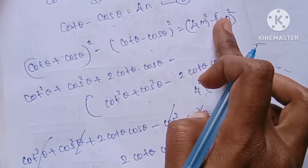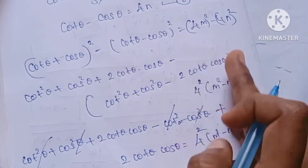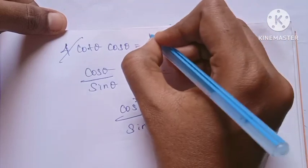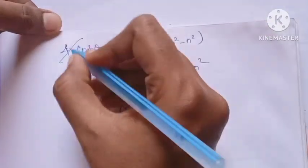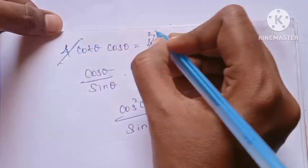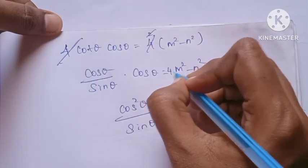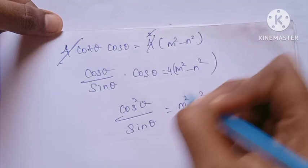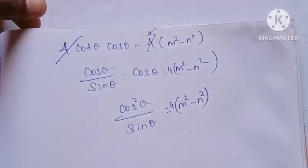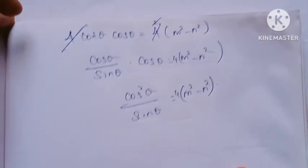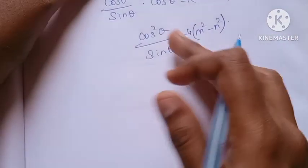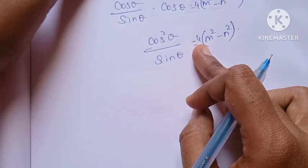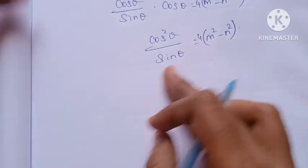So 4m whole squared gives 4 squared as a common factor, and 4n whole squared also gives 4 squared as common. Since 4 squared appears on both sides, you can cancel it. So after cancellation, we proceed to simplify.